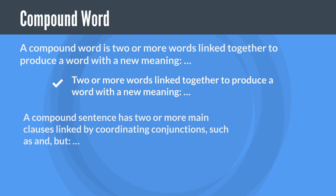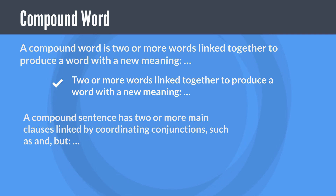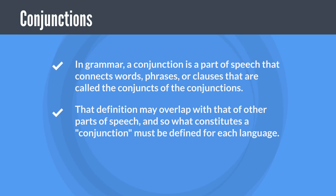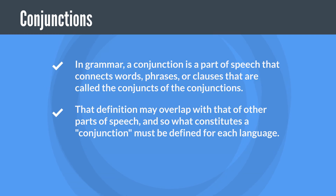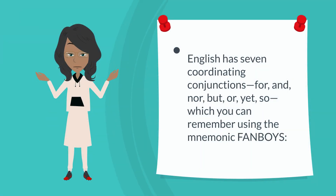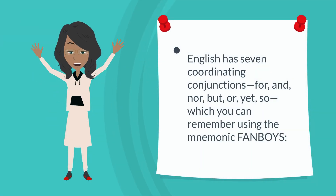A compound word is two or more words linked together to produce a word with a new meaning. A compound sentence has two or more main clauses linked by coordinating conjunctions such as 'and' or 'but.' In grammar, a conjunction is a part of speech that connects words, phrases, or clauses. English has seven coordinating conjunctions — for, and, nor, but, or, yet, so — which you can remember using the mnemonic FANBOYS.